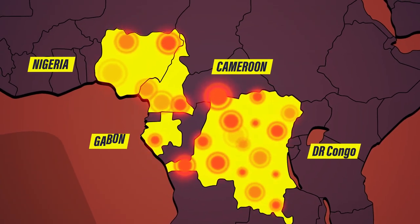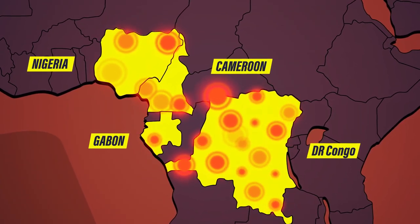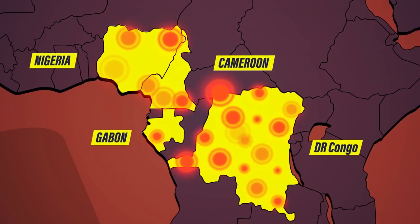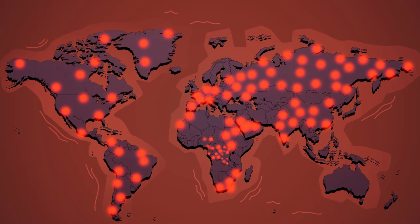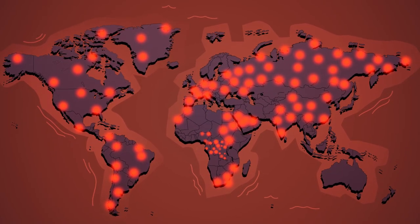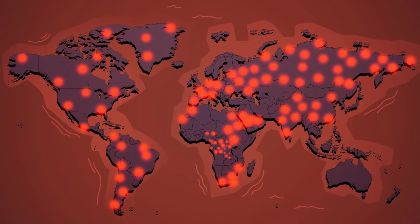Since then, MPOX has sporadically appeared, mainly in Central and West Africa, in countries like Nigeria, Cameroon, and Gabon. But since July 2022, the disease has spread to over 100 countries where the virus had never been seen before.